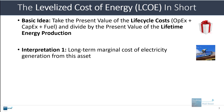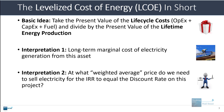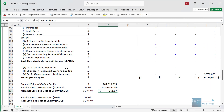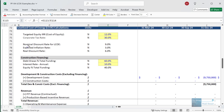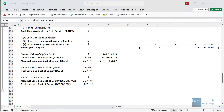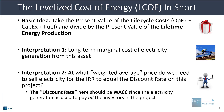You could interpret this as the long-term marginal cost of electricity generation from this asset. You could also interpret it as the weighted average price that you need to sell electricity at for the IRR to equal the discount rate on this project. So if you want the overall IRR for all investors to equal this 9% nominal discount rate, then this is the price at which, over the long term, you need to sell electricity. The discount rate here should be WACC — the weighted average cost of capital — because the electricity generation is used to pay all the investors, both equity and debt investors.